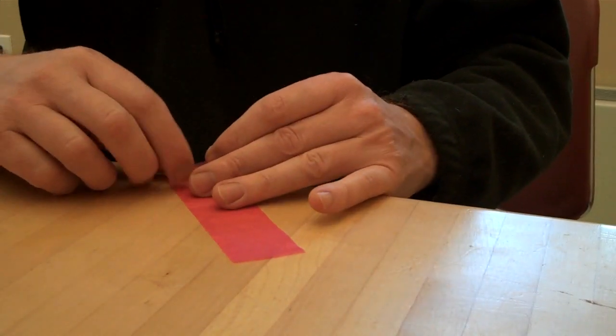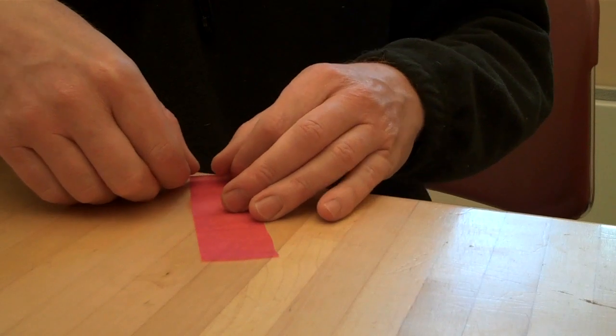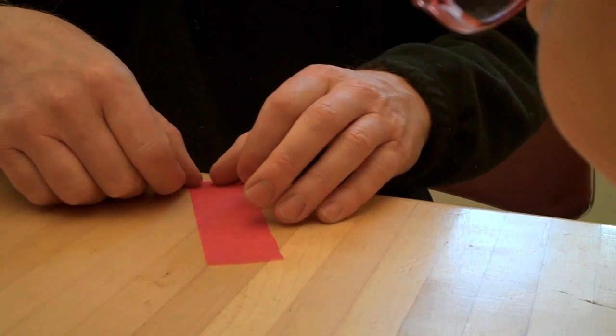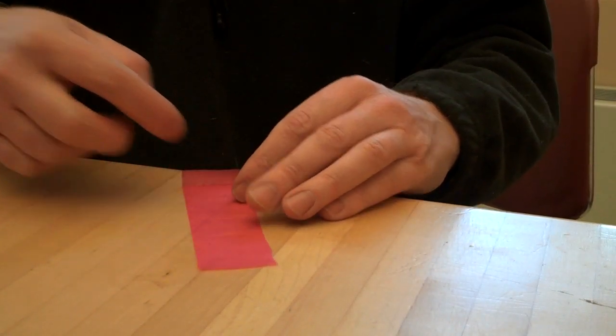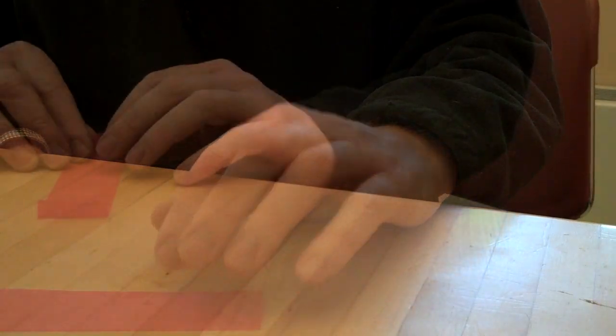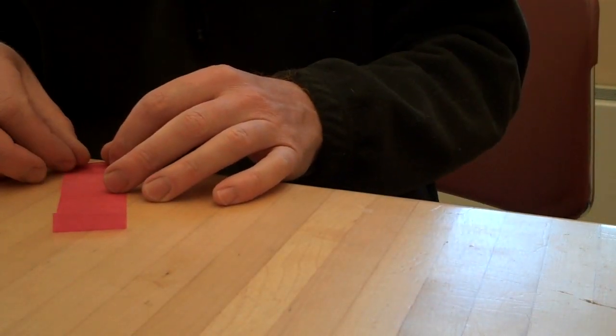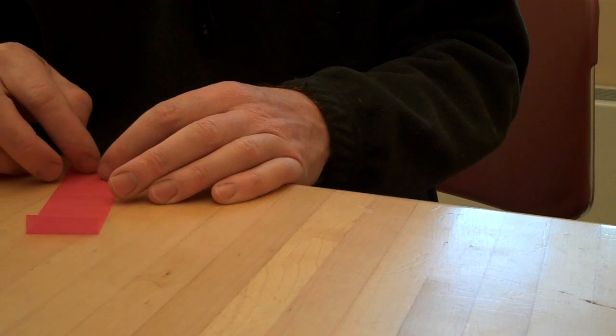So, first what you do is you fold up the end like this. Just fold a teeny little fold up like this. How teeny? About this much. See? Do the same for the other side. Same for the other end. There we go.